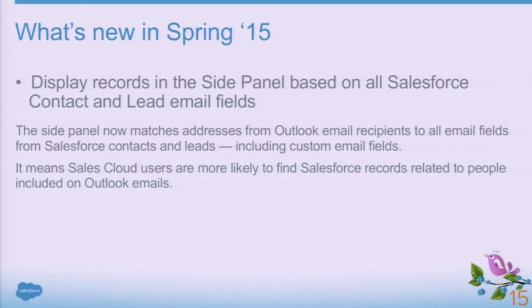The second feature, which I'll demo later today, is around displaying contact information in the side panel based on the email address your clients are using to contact you. If multiple email addresses exist on your contacts, we are going to search for all those email addresses so that the side panel becomes more intelligent and the likelihood of displaying the right contact is increased. It helps sales users see the right information at the right time.